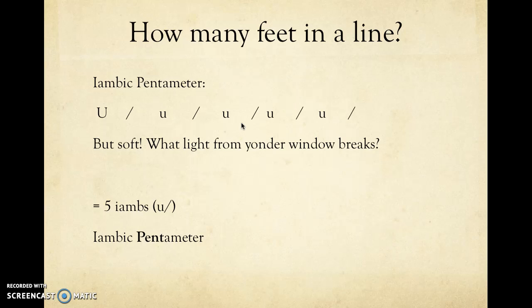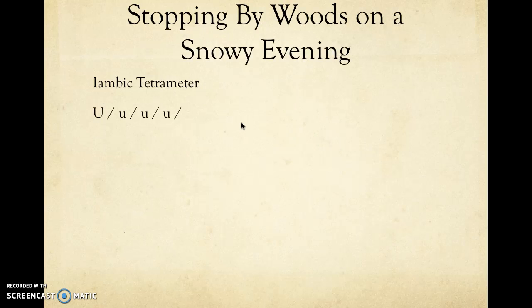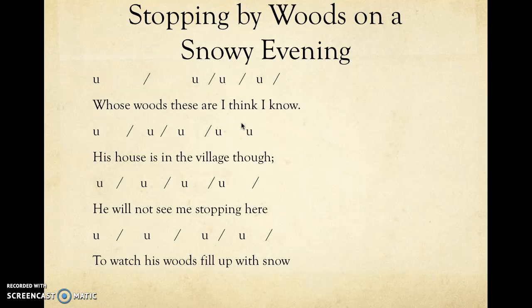In 'Stopping by Woods on a Snowy Evening' by Robert Frost, he also uses iambs, but he only includes four feet per line, so it's iambic tetrameter. If you look at: 'Whose woods these are, I think I know. / His house is in the village, though. / He will not see me stopping here / To watch his woods fill up with snow.' Really catchy meter here.